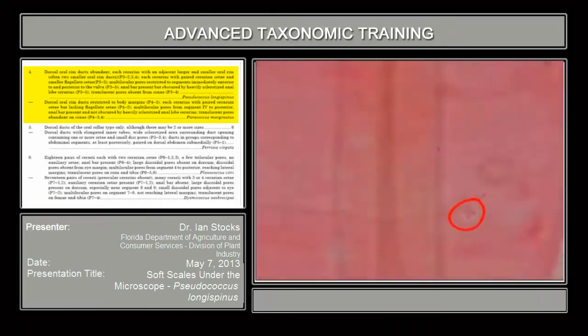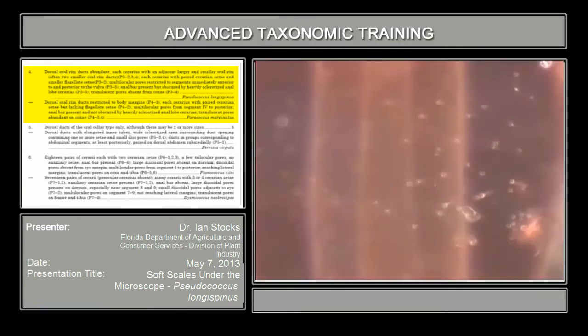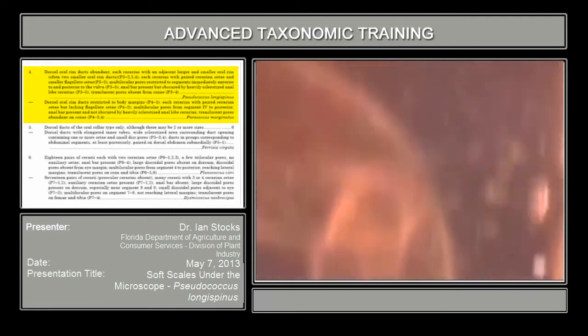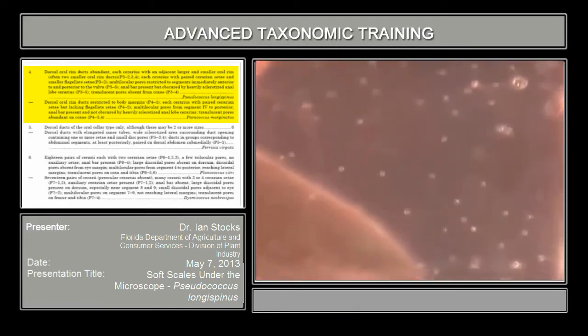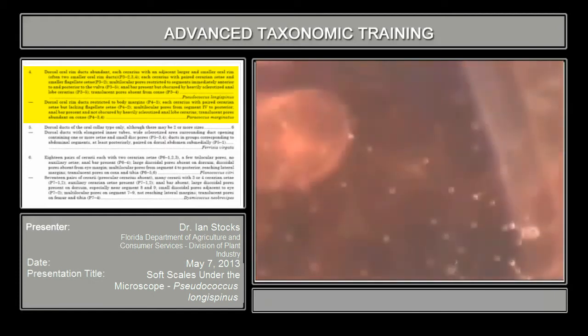And they become very clear when you find them in dorsal ventral view. And here's one on the screen right now. That one, you can see, it's a very distinct. So this is it with a slightly different lighting setup. I don't know if that helps a little bit there. Now, what you can do is move along the specimen on the margin for each serarius and evaluate the presence of those oral rim ducts. Okay? You don't have to worry so much for right now that it has two sizes, just that they're there. Okay?